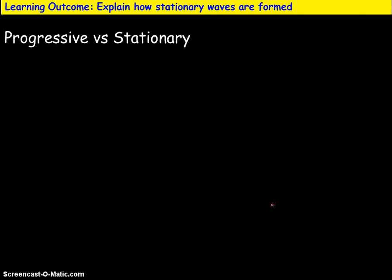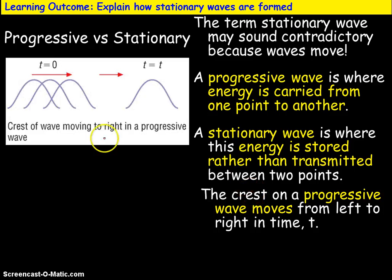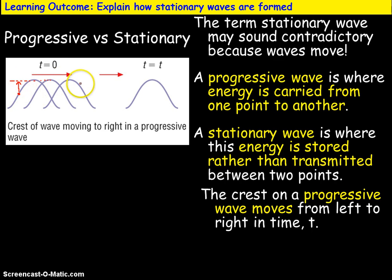A progressive wave transfers energy from one point to another. Looking at a progressive wave, as time goes on the peak will travel from left to right. If you consider any point on this wave, at some time it will oscillate and reach the maximum displacement, which is the amplitude. So every point on this wave will have the same amplitude at some point, even though at a particular time it may have a different displacement.